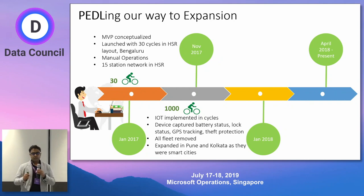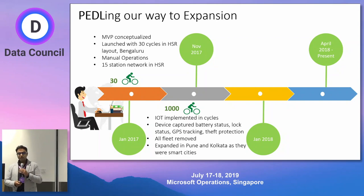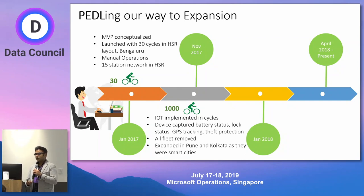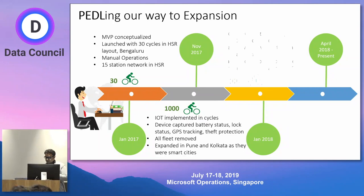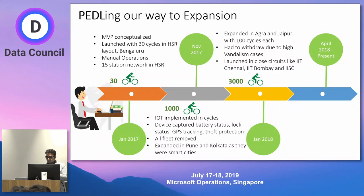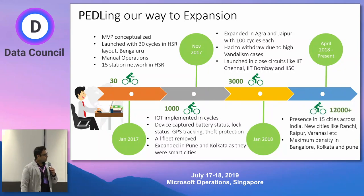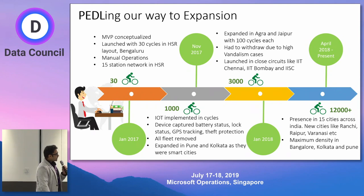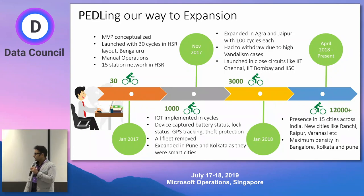We also developed an anti-theft device inside the lock. If you try to shake or remove the lock, a buzzer goes off and it alerts us at the back end that someone is trying to steal the bike — because in this business vandalism is a very common phenomenon. As we had success with 1,000 bicycles, we expanded to 3,000 and very soon to 12,000 bicycles across the country. Right now we are present in 15 cities across India.